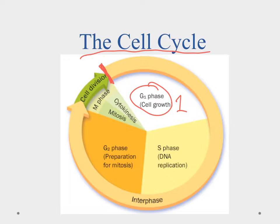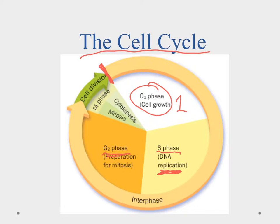After G1, the cell enters the S phase, where it goes through DNA replication. Before the cell can split, it must copy its DNA so both daughter cells get their own copy and can function as working cells. After the S phase, it goes into G2, which is preparation for mitosis — the cell may grow a bit bigger and ensures it has enough copies of organelles for both daughter cells.